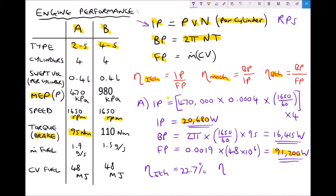Next let's calculate our mechanical efficiency, which is a ratio of the brake power to the indicated power. We have a brake power of 16,415 and an indicated power of 20,680. 16,415 divided by 20,680 gives a mechanical efficiency of 79.4%.